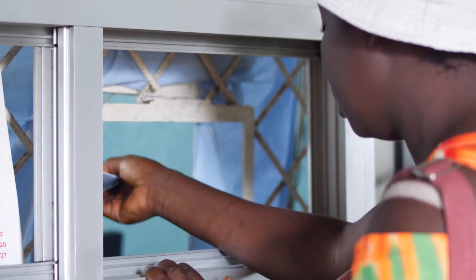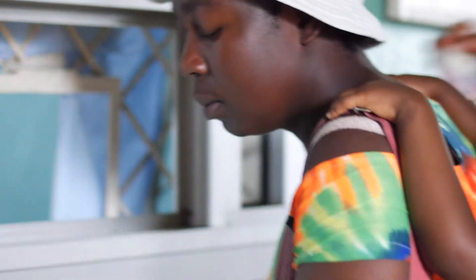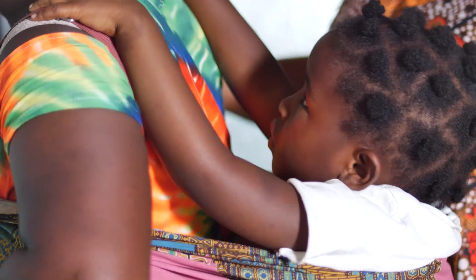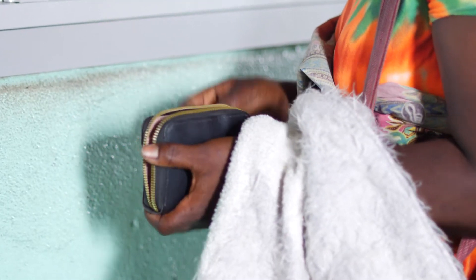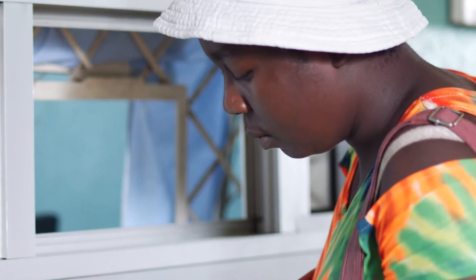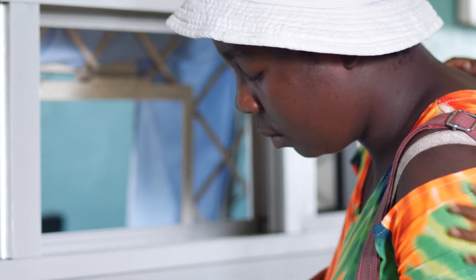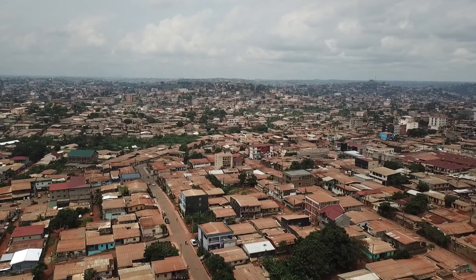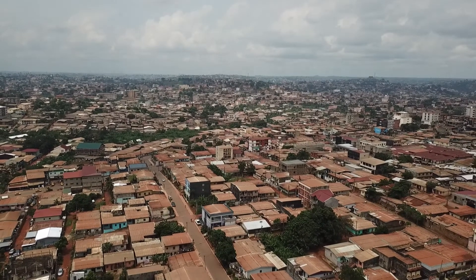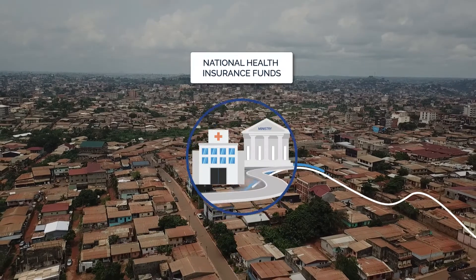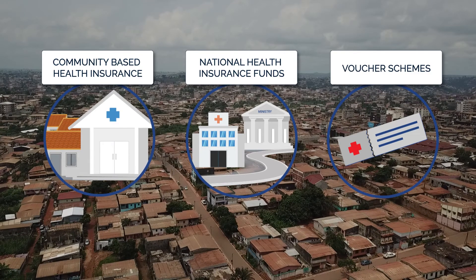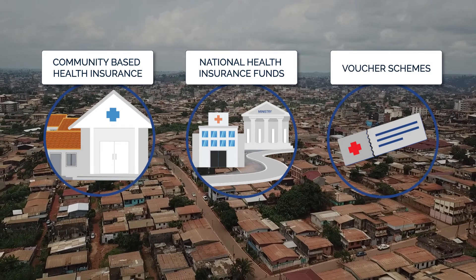Marie is a mother who wants to enrol in health insurance so she doesn't have to worry about paying high costs if she or her children get sick. Out-of-pocket expenditure on health amounts to more than 40% of total health care costs in low-income countries, a barrier to accessing quality health care. Various scheme operators have introduced different health financing schemes to tackle such large expenditures, ranging from national health insurance funds, community-based health insurance, or even voucher schemes aimed at providing specific health services.